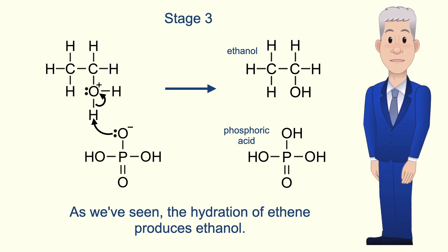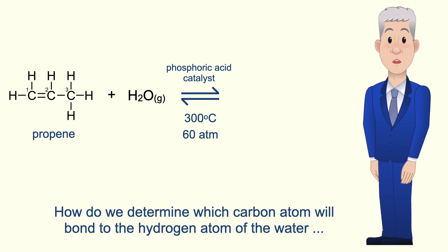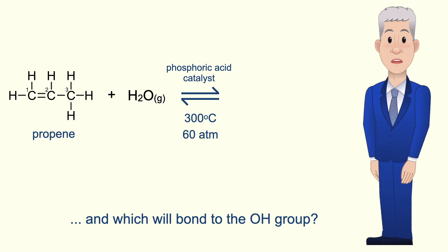The hydration of ethene produces ethanol but what about when we hydrate an asymmetric alkene such as propene? How do we determine which carbon atom will bond to the hydrogen atom of the water and which will bond to the OH group?